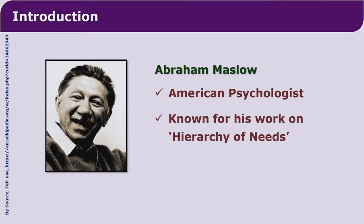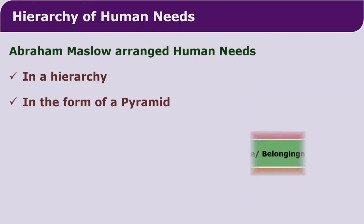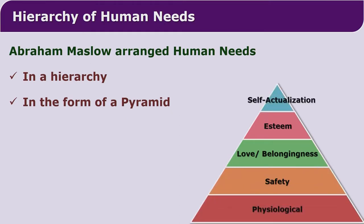Abraham Maslow, an American psychologist, has arranged our needs in the form of a hierarchy. We call his theory the theory of hierarchy of needs. He has arranged our needs in the shape of a pyramid, with lower order needs towards the base, and as we move up, the higher order needs emerge.